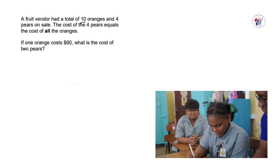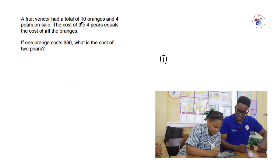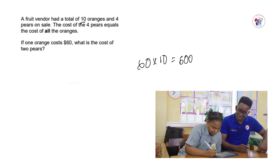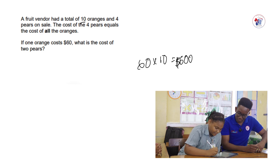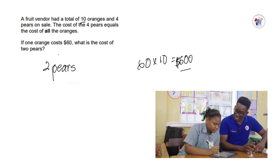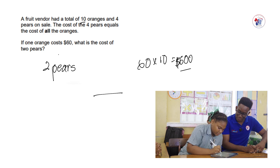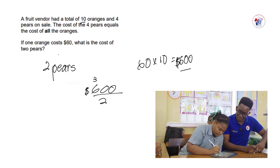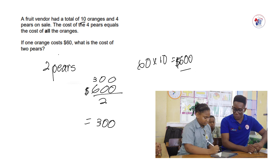So you must multiply 10 by 60 since one orange equals $60. When you do that, you get 600. So that 600 would be the cost for all of the oranges. But they're asking for two pears now. If they're asking for two pears, you have to get half of 600, because we got four pears in total and they're asking for two — so half of it. So your answer would be $300, the cost for two pears.